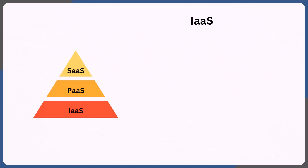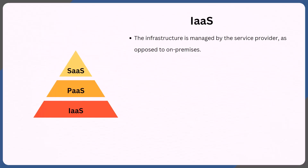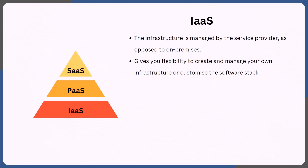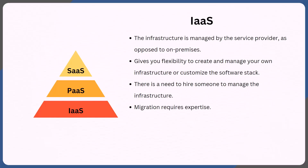Let's now talk about infrastructure as a service or IaaS. In this case, the infrastructure is managed by the service provider as opposed to on-premise. In other words, it's similar to having an on-premise infrastructure, except the infrastructure is managed by somebody else and provided to you as a service. It gives you flexibility to create and manage your own infrastructure or customize the software stack. There is a need to hire someone to manage the infrastructure, and migration requires expertise and might be time-consuming. Amazon EC2 (Elastic Compute Cloud) and DigitalOcean are a couple of examples of IaaS — with these services, you get to create instances and choose how much memory and storage you need.